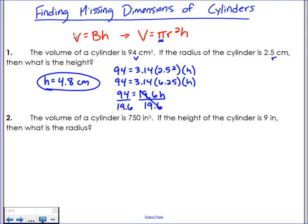If I look at the next example, it's very similar. I know three out of the four variables in my equation. I know volume. The volume of the cylinder is 750 inches. If the height of the cylinder is 9 inches, so I know h, it says then what is the radius? And obviously I know that pi is 3.14.